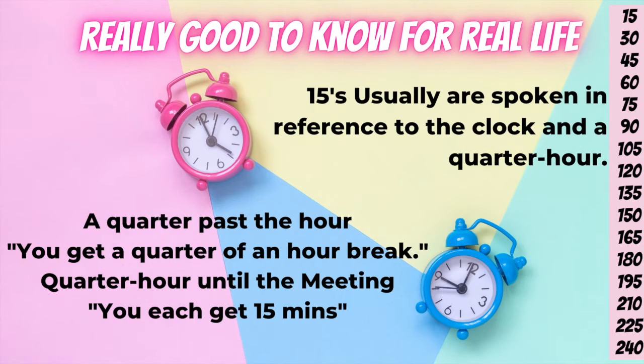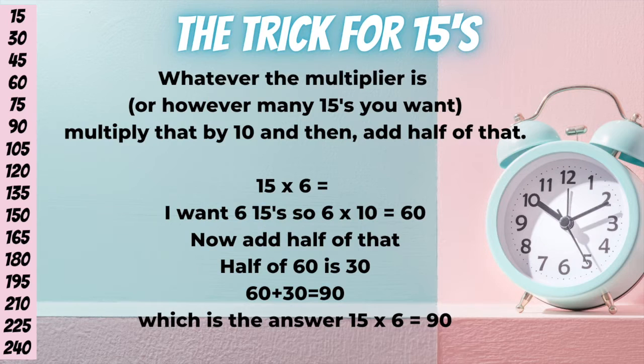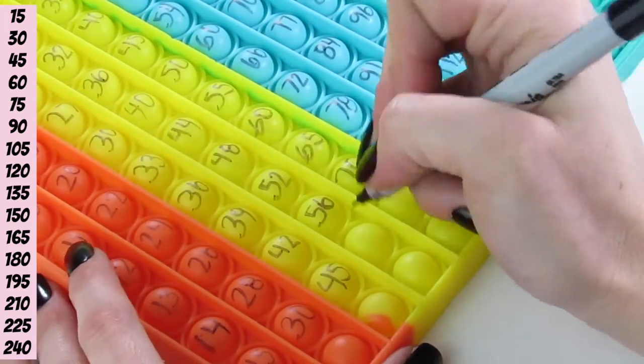But there is a trick for multiplying 15s. So, you take the multiplier or however many 15s you want and you add a 0 to it or multiply it by 10. And then you take that number and you cut it in half and you add those two numbers together. So, for example, if you have 15 times 6, you take 6, multiply it by 10 or add a 0 and you get 60. Now, what is half of 60? Half of 60 is 30. So, you take 30 and you add it to 60 and you get 90, which is the answer for 15 times 6.